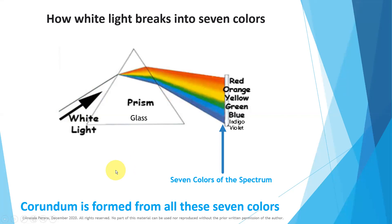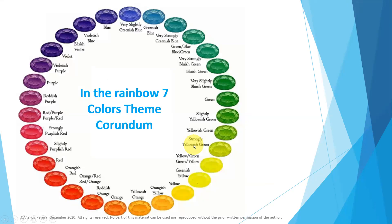Corundum is formed from all these 7 colors, and white also — altogether 8 colors. This is the concept we have to understand; we need it everywhere. White light is breaking into 7 colors, so white light consists of these 7 colors. These are the rainbow 7 colors.